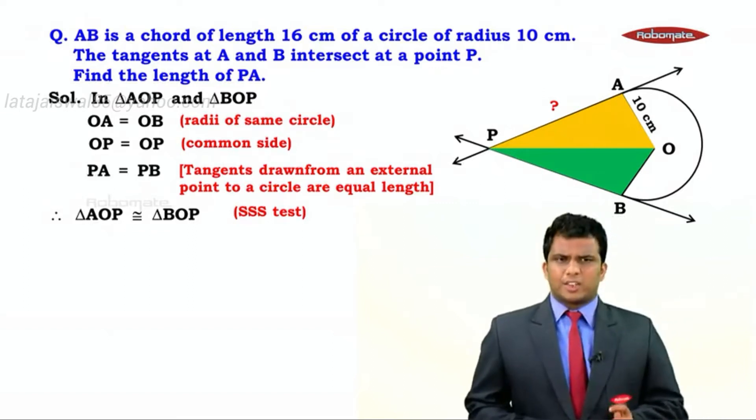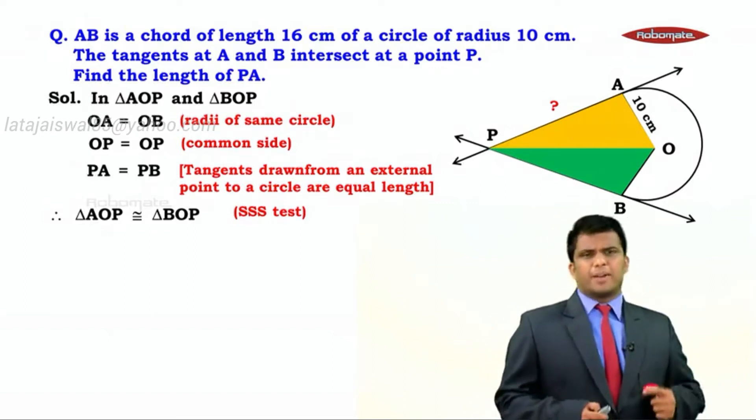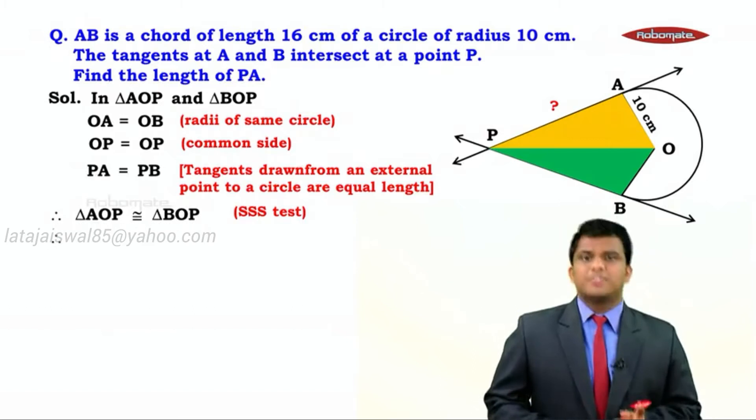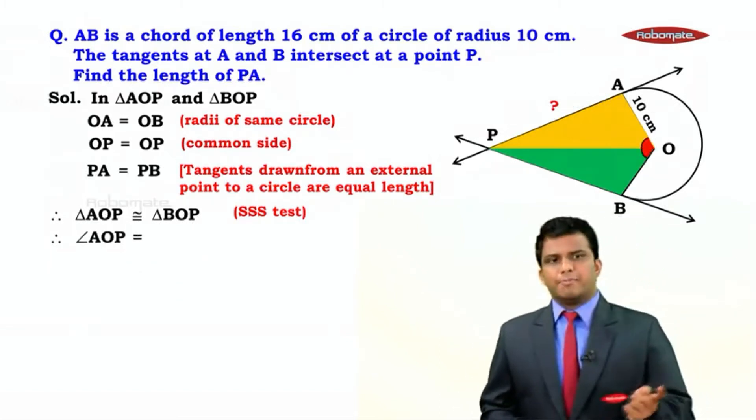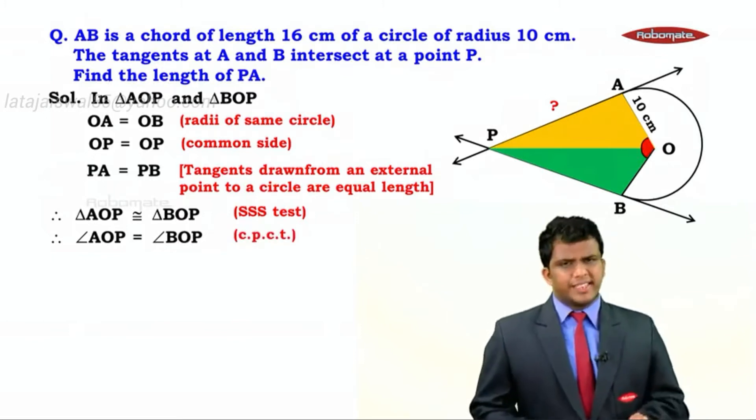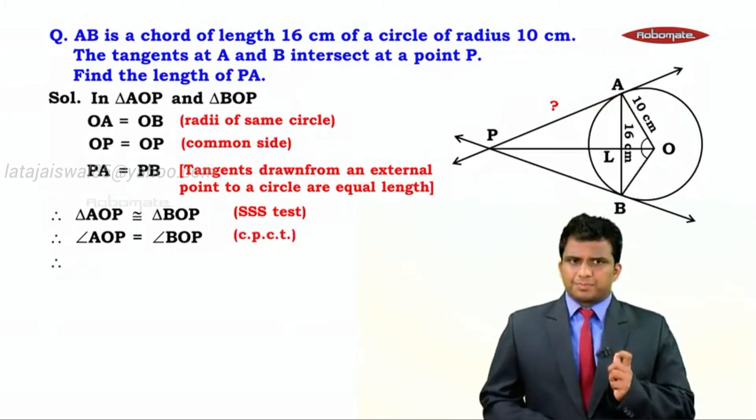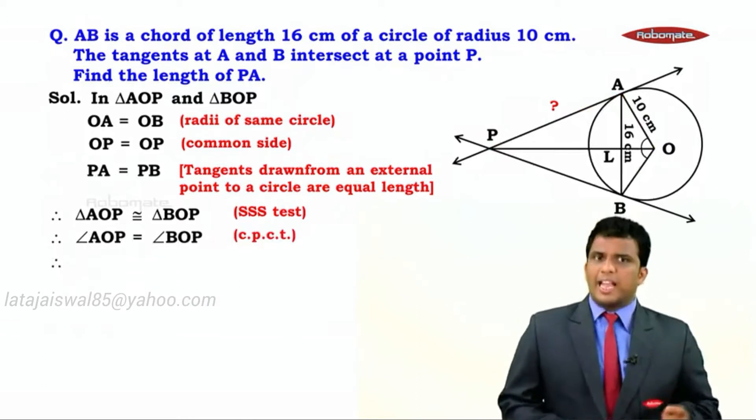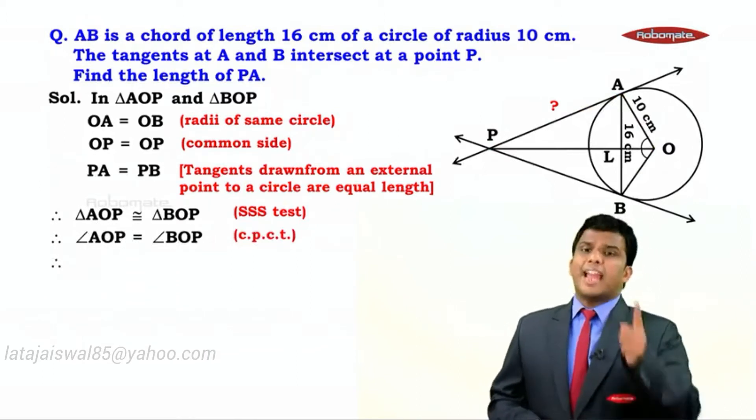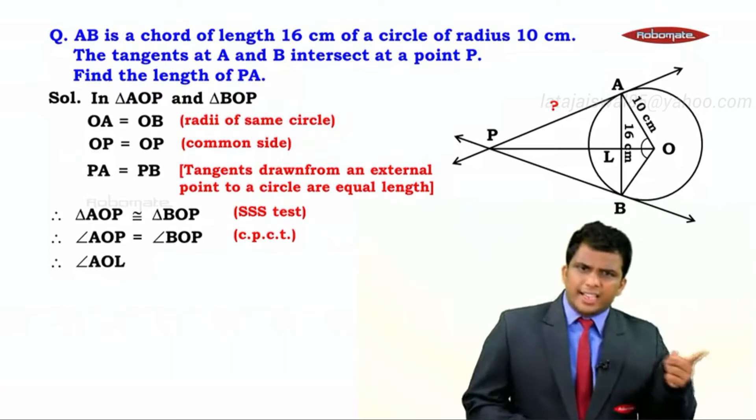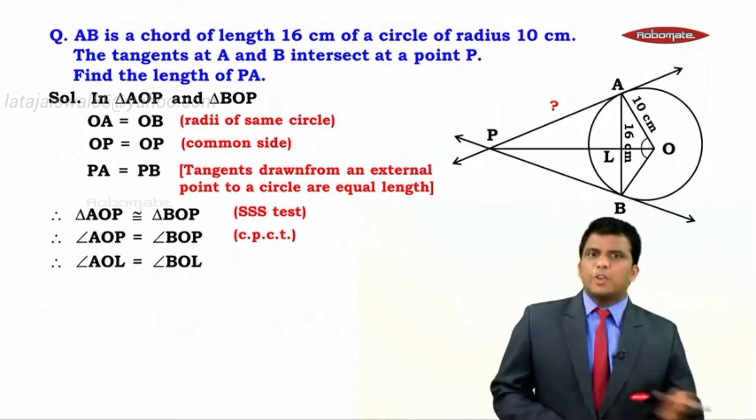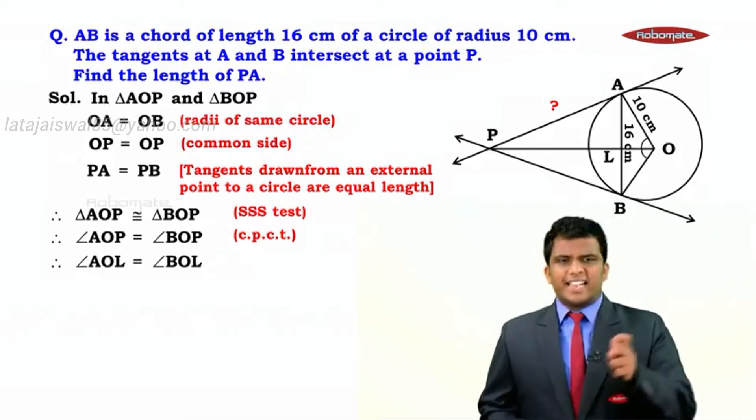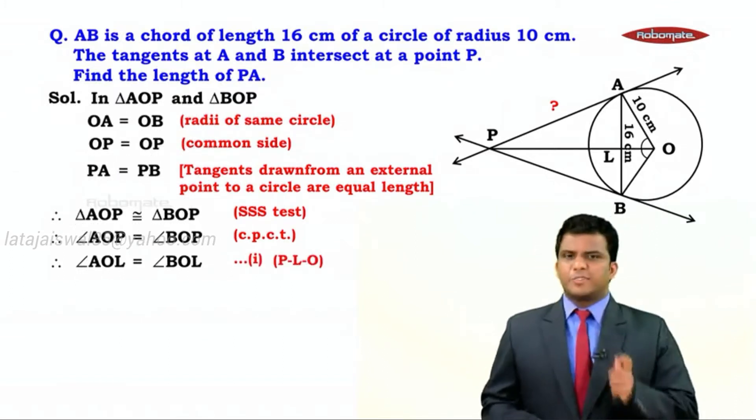Now, what happens if the triangles are congruent? We can say the corresponding parts are also equal. That means angle AOP equals angle BOP. The reason is CPCT. But because we have point L between P and O and the points are collinear, we can address angle AOP as angle AOL and angle BOP as angle BOL. Let this be result number 1.